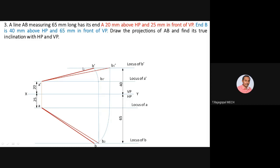After completing both front and top view projections, verify that B-dash and B lie on the same projector. Then check all given data from the question: the 65mm true length should be represented either in the top or front view based on convenience and space. Use a protractor to identify the inclination of A-dash B1-dash with XY — this is theta, the true inclination with HP, which equals 18 degrees.